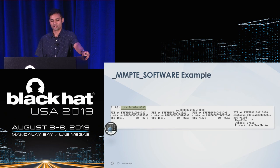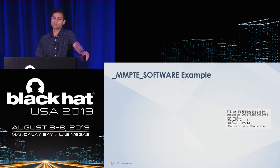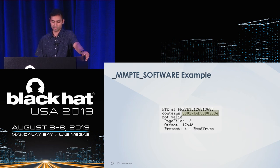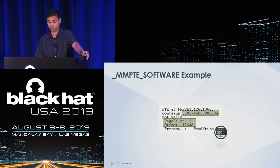Page file low index 0 traditionally corresponds to pagefile.sys, and 1 corresponds to swapfile.sys. Page file high is the offset within that specific page file to locate your data. Using the PTE extension in the Windows debugger, we can traverse the page tables and arrive at the 64-bit PTE — for example, a page file index of 2 and an offset of 0x17A4D.